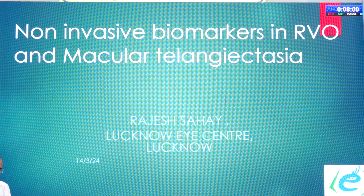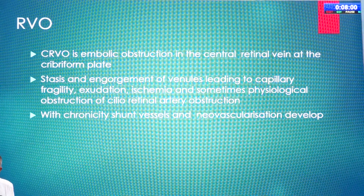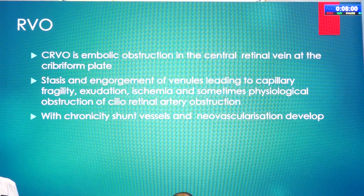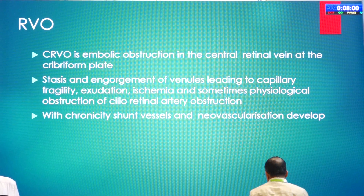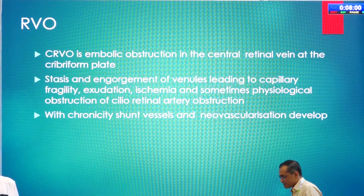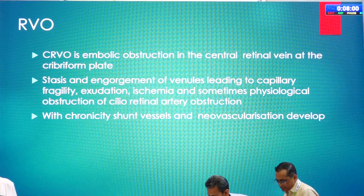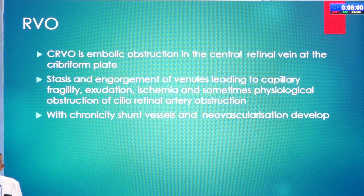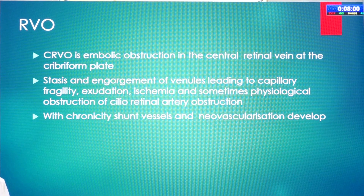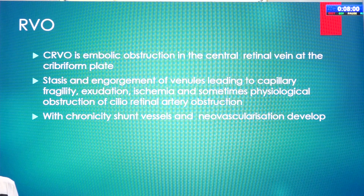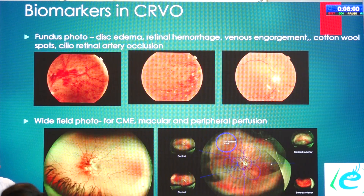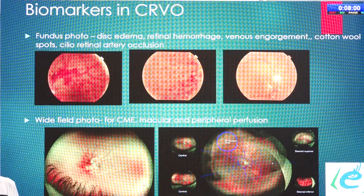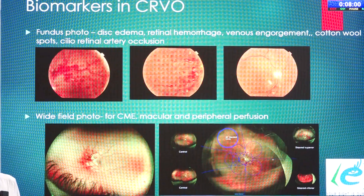We all know that CRVO is an embolic obstruction in the central retinal vein at the cribriform plate, causing stasis and engorgement of venules, leading to capillary fragility, exudation, ischemia, and sometimes physiological obstruction of the cilio-retinal artery. With chronicity, shunt vessels and neovascularizations develop. The non-invasive biomarkers include fundus photography, where we see disc edema, retinal hemorrhages, venous engorgement, cotton wool spots, and cilio-retinal artery occlusions.